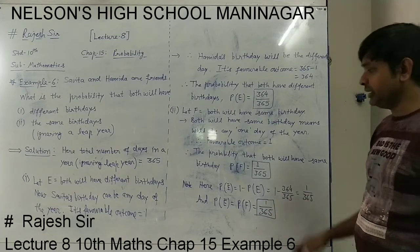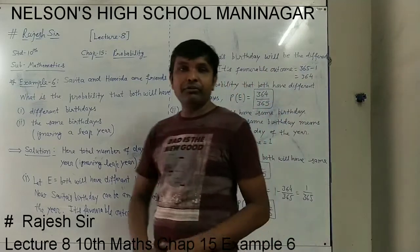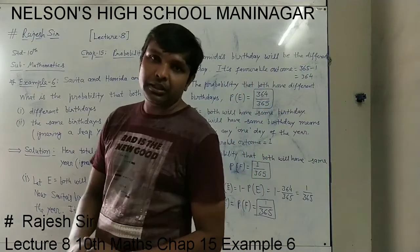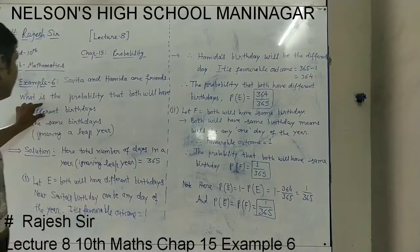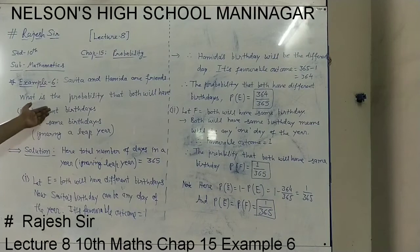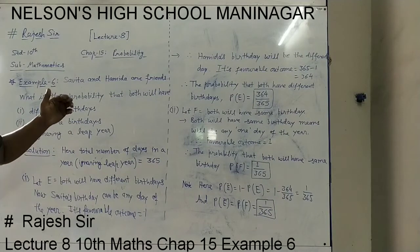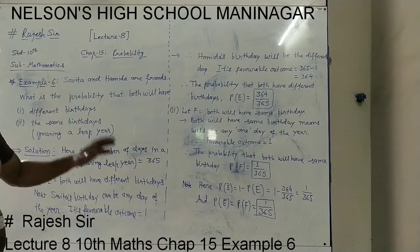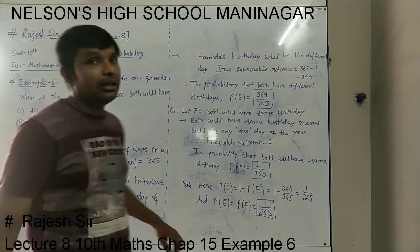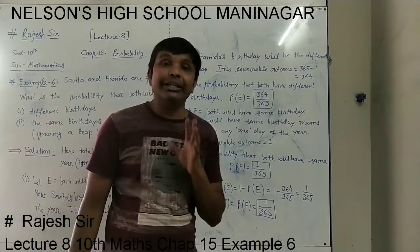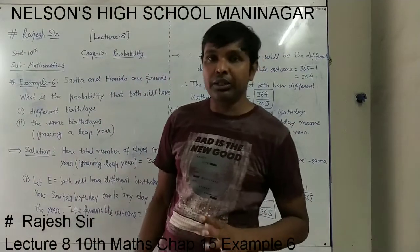This is the second way of finding the other probability. If we find any one of these, the other one we can find by subtracting that probability from 1, because both events are complementary events here.